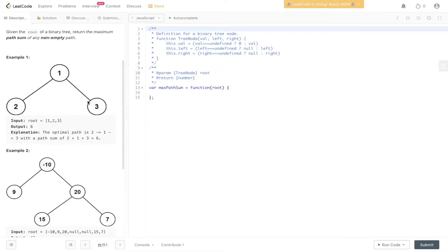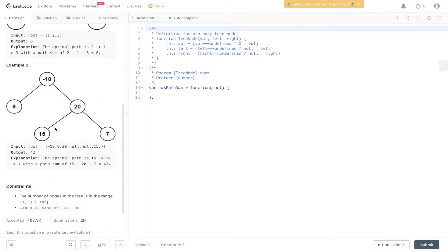So in example 1, we have this binary tree. The output is 6 because the maximum path sum is 1 plus 2 plus 3. In example 2, we have this binary tree. The output is 42 where we have the maximum path sum equaling this subtree right here, 15 plus 20 plus 7.